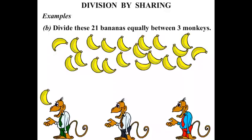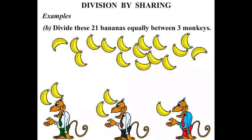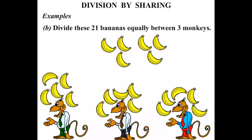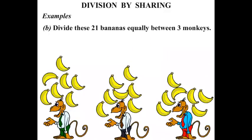1, 2, 3, 4, 5, 6, 7, 8, 9, 10, 11, 12, 13, 14, 15, 16, 17, 18, 19, 20, 21. So they've been split up evenly. Let's see how many each get.